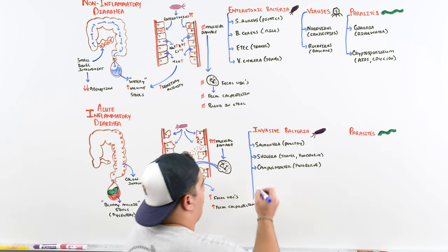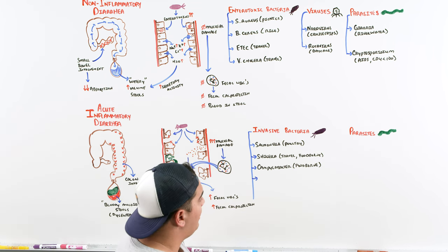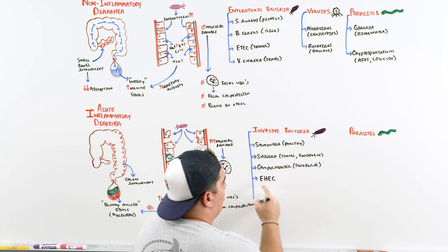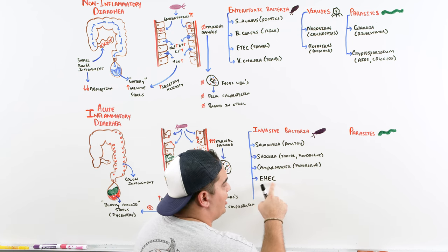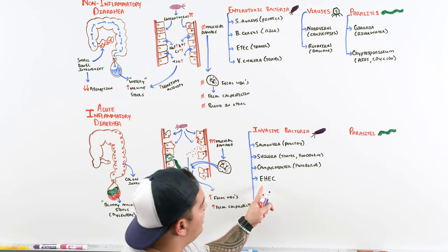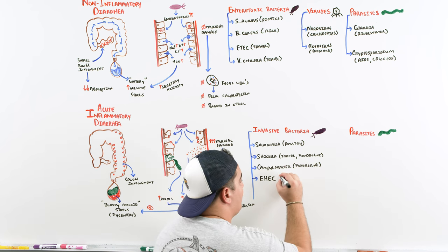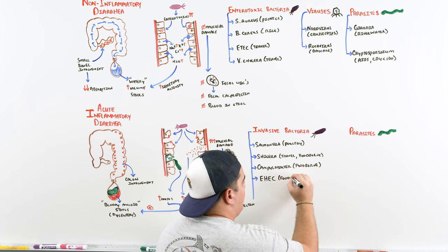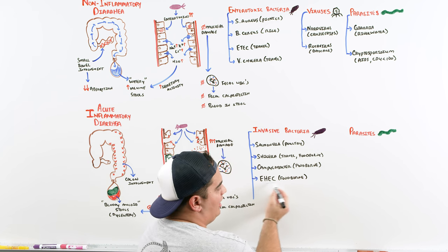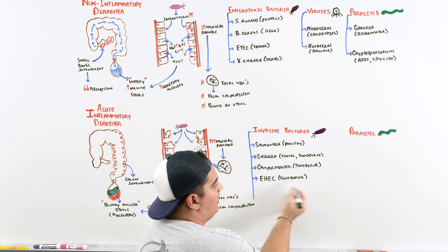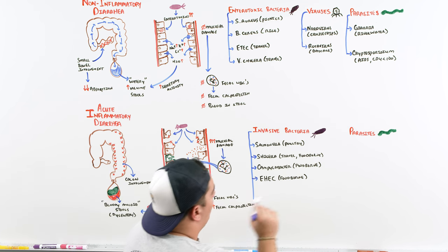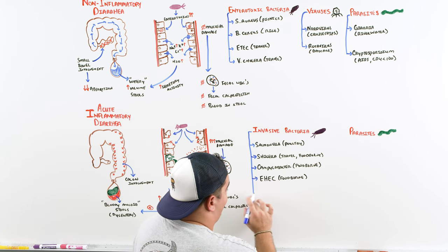A very high-yield one is EHEC — enterohemorrhagic E. coli O157:H7. This is foodborne and can wreak havoc on the body, notably causing hemolytic uremic syndrome. Shigella can also cause HUS.